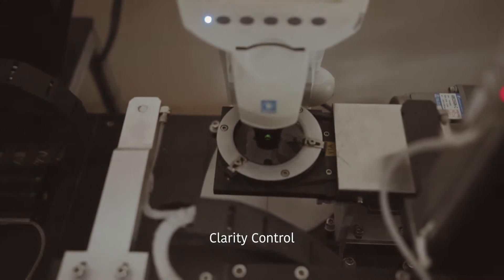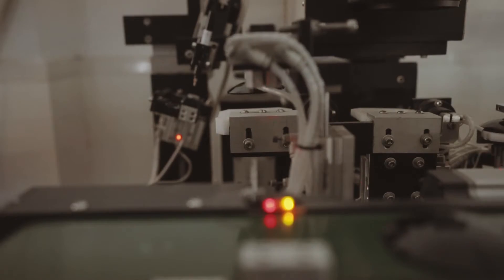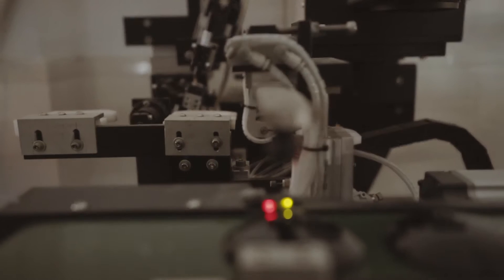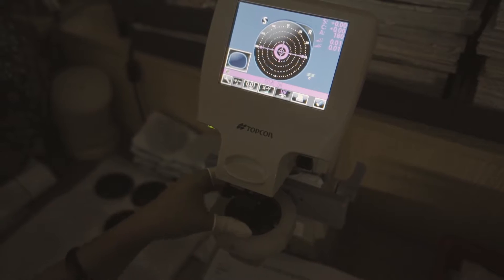Machines then perform clarity control, assuring each lens is optically correct. Afterward, each puck is then hand checked yet again for clearness.